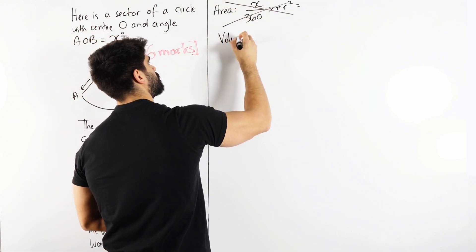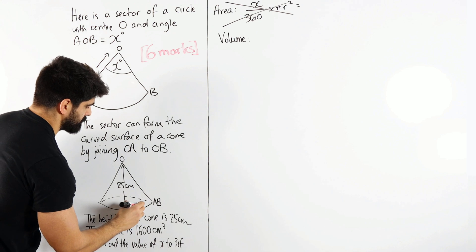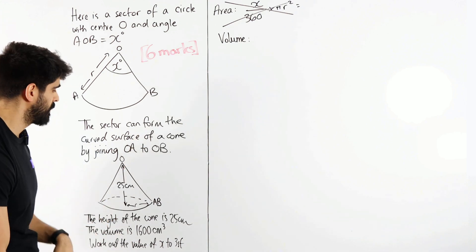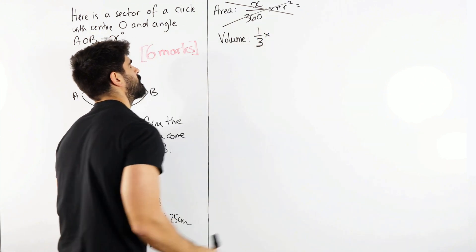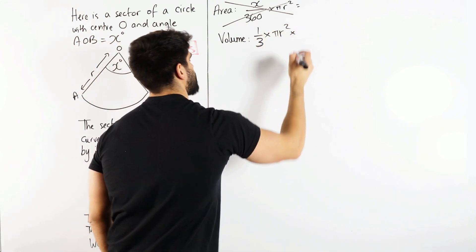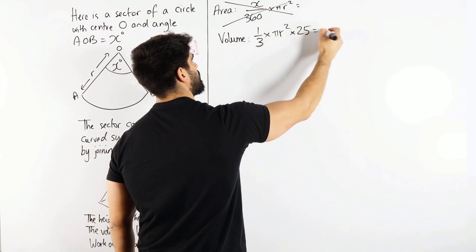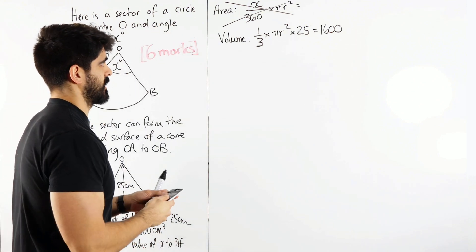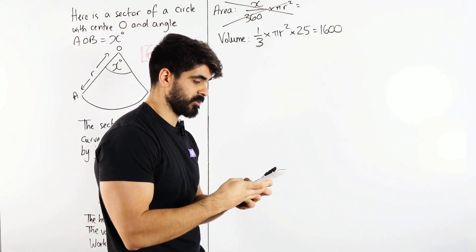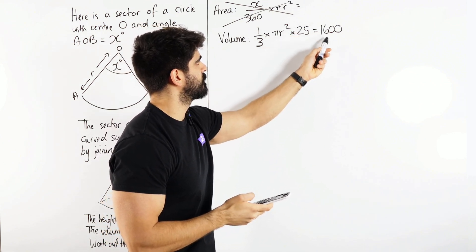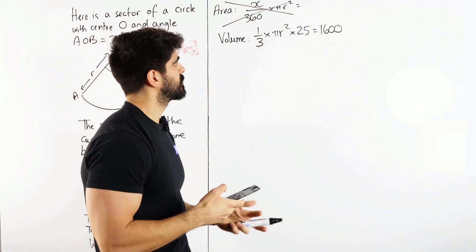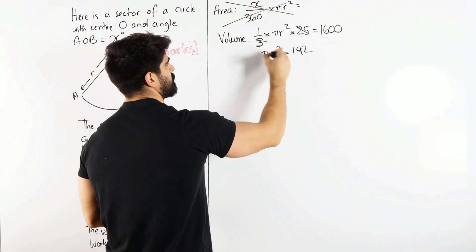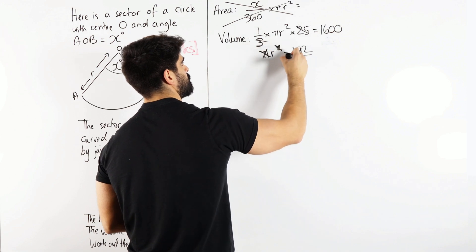Let's start with the volume. I'm going to label the base radius as r. The volume of a cone is one-third of the base area times the perpendicular height. So one-third times π r squared times 25 equals 1600. Dividing both sides by 25 gives 64, then multiplying by 3 gives π r squared equals 192. Dividing through by π and then square-rooting gives us our radius r equals the square root of 192 over π.